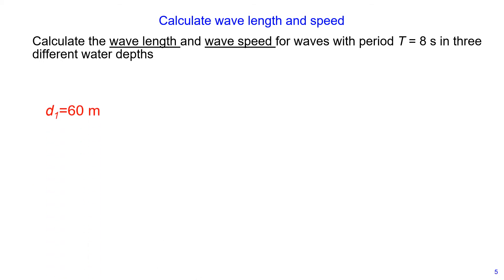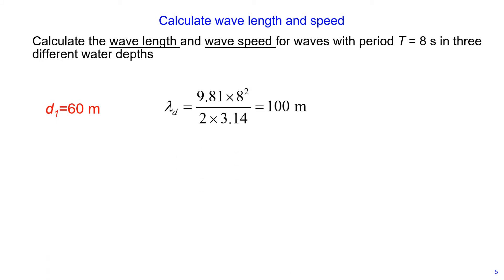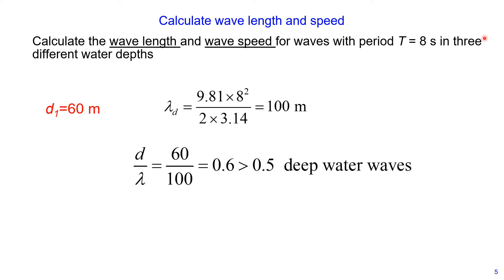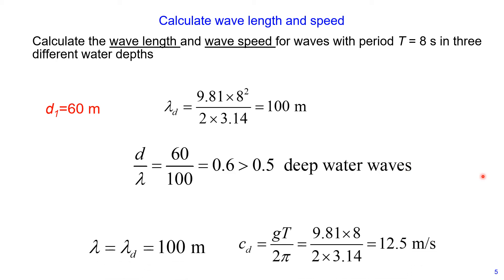We start with depth 60 meters. We calculate the wavelength, and this is 100 meters. The ratio of water depth to wavelength is 0.6, and this is greater than 0.5. Therefore, we have deep water waves, and we calculate the wave speed to be 12.5 meters per second, adopting the wavelength from the deep water waves equation.